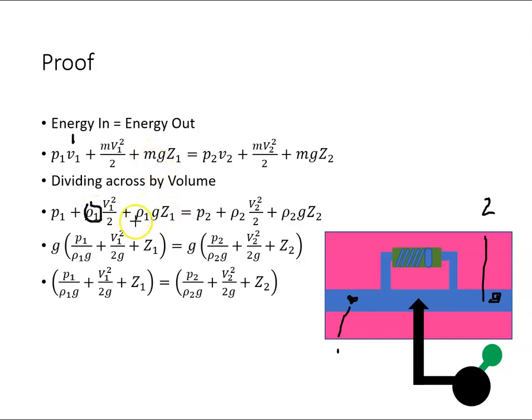I'm just going to take the g out of all the terms, and then the g's will cancel. We're left with this expression down here at the bottom: p₁/(ρ₁g) + v₁²/(2g) + z₁. Let's take that on to the next slide.